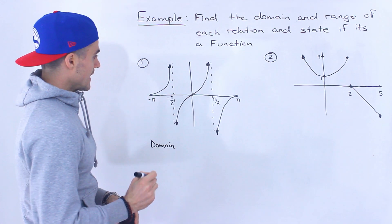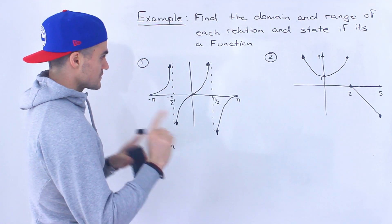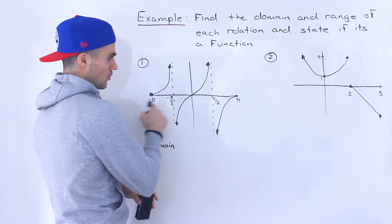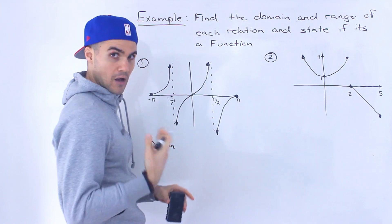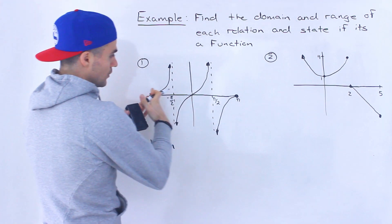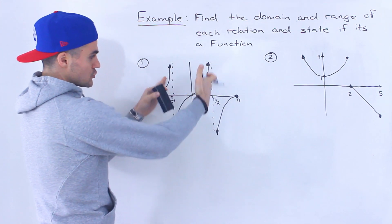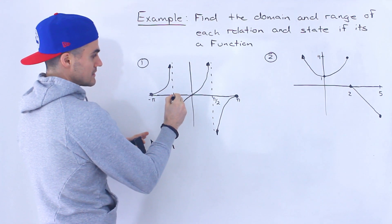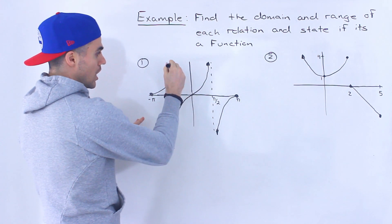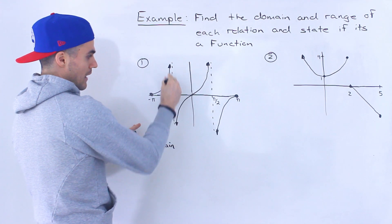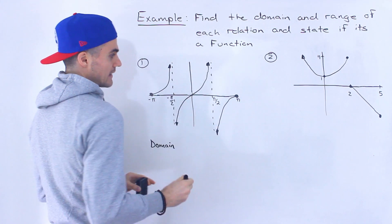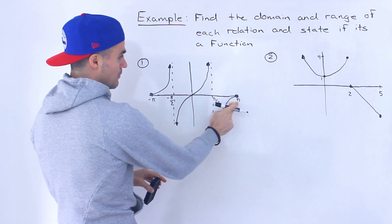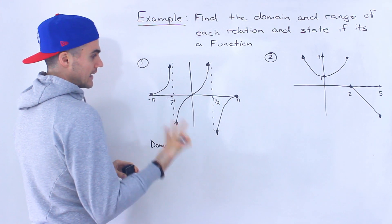Notice that the x values are ranging from negative pi over here to positive pi. As we move from left to right, there are two breaks — these two vertical asymptotes. So this relation is not defined at negative pi over two and is not defined at positive pi over two, but every other x value in between negative pi and positive pi is defined.